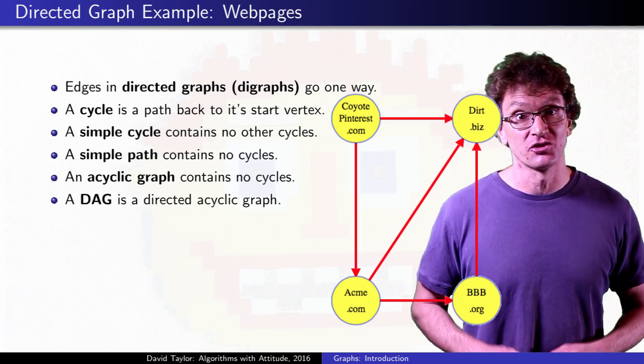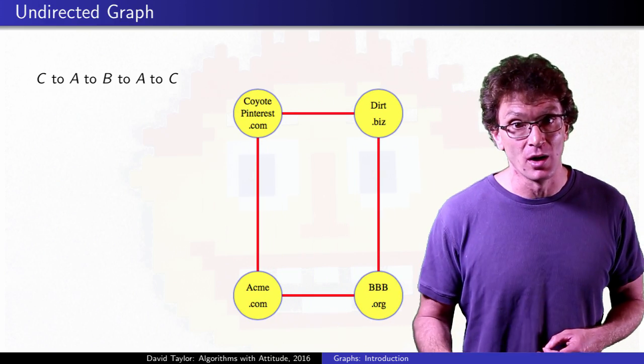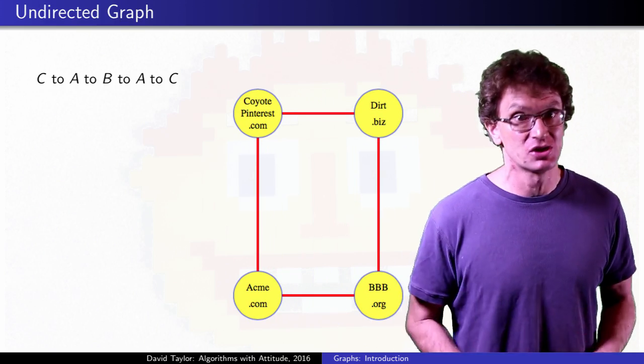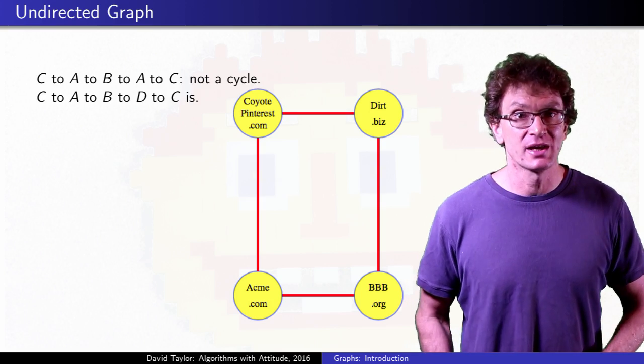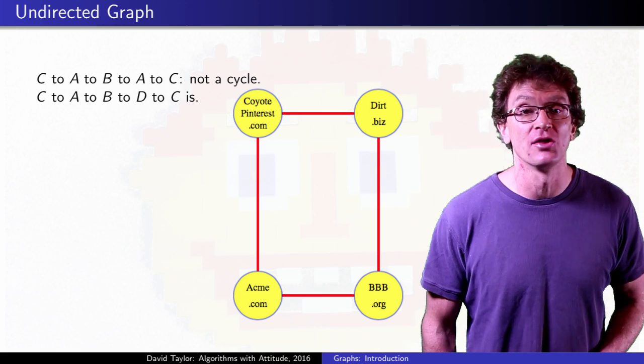Cycles in undirected graphs are similar, but just to be clear, if you use an edge to get somewhere, and then use that same edge to get back, that's not a cycle, it's just cheating. You can't just take a simple path, append it to its reverse, and call that a cycle.